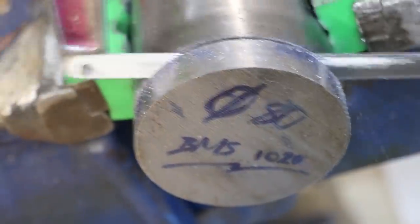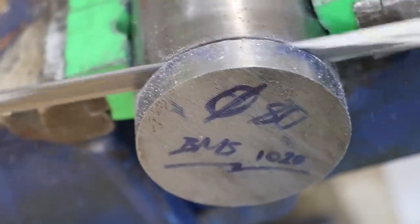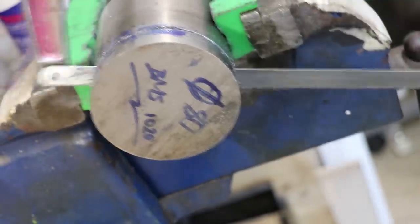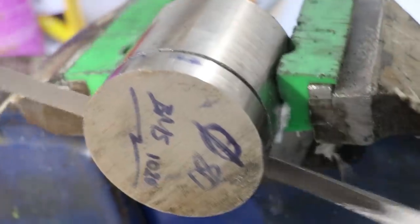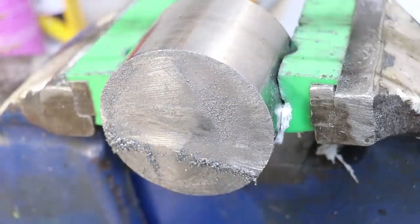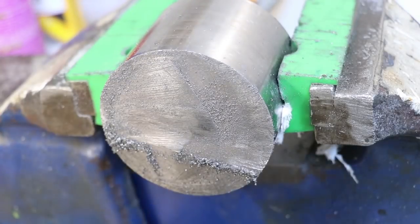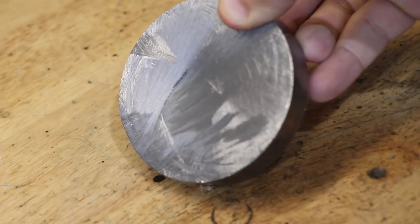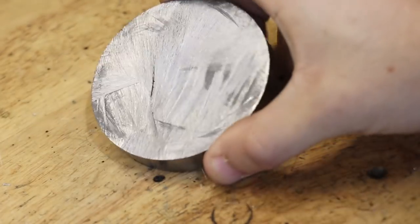With the disc cut off, I need to remove the inside material to form the ring shape that I need.